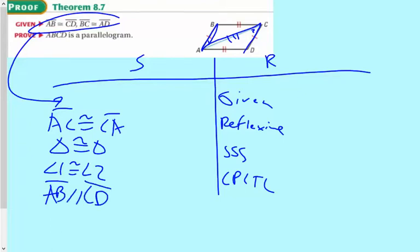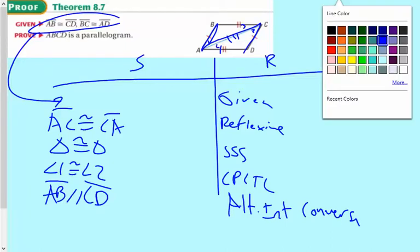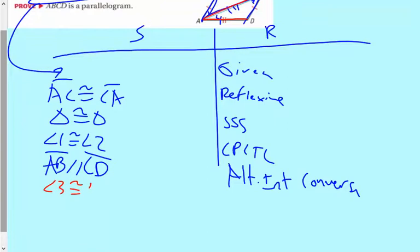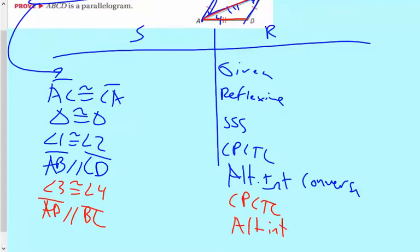Then what I'm going to do is alternate interior converse. I'm going to say angle 3 is congruent to angle 4. Let's use a different color here, I'm going to use red. That makes BC parallel to AD. So angle 3 is congruent to angle 4, CPCTC, and then AD is parallel to BC.